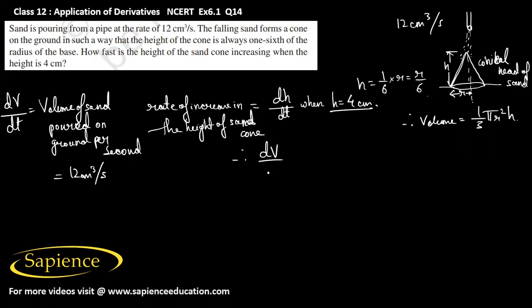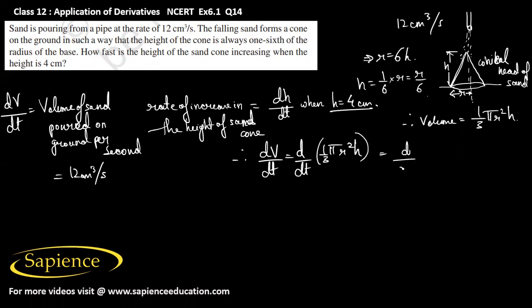So dV/dt equals d/dt of (1/3 π r² h). Now since h = r/6, we get r = 6h. Substituting, this becomes d/dt of (π/3 · 6h · 6h · h), which simplifies to d/dt of 12π h³.